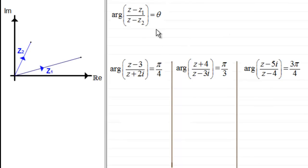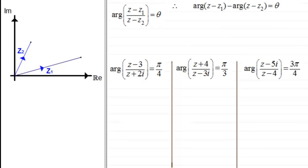To do that, you should be familiar with the rule that if you've got the arg of a fraction, it's the same as the arg of the top minus the arg of the bottom. So I can write this as the arg of z minus z1, minus the arg of z minus z2, equals theta.